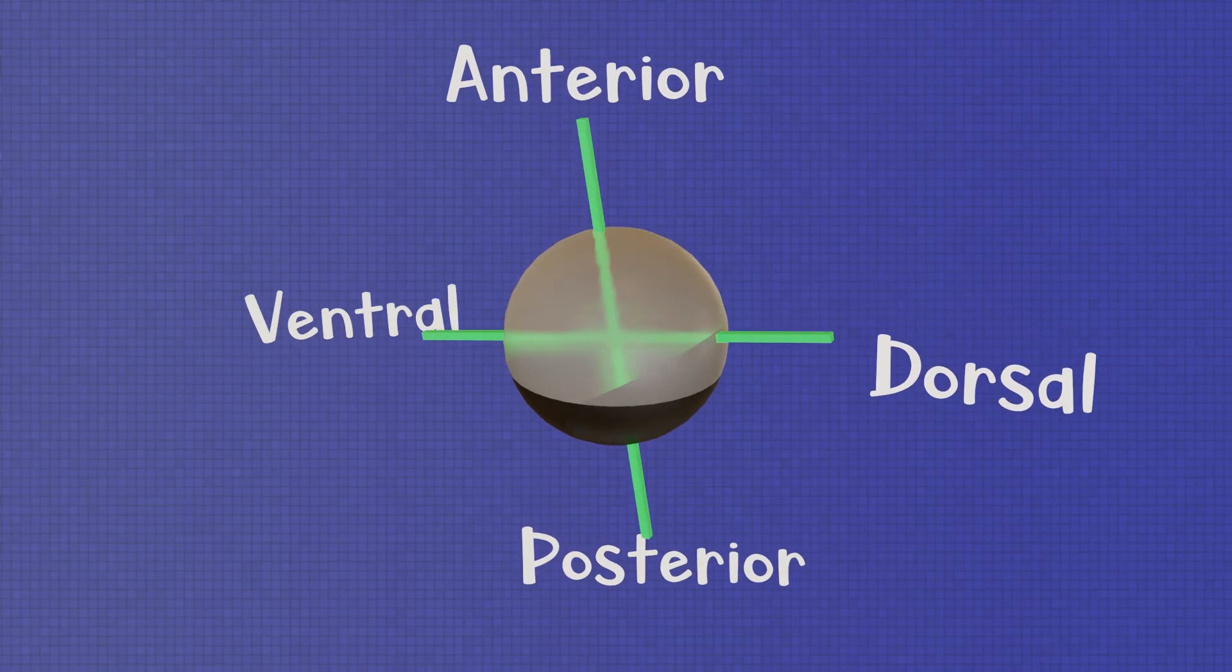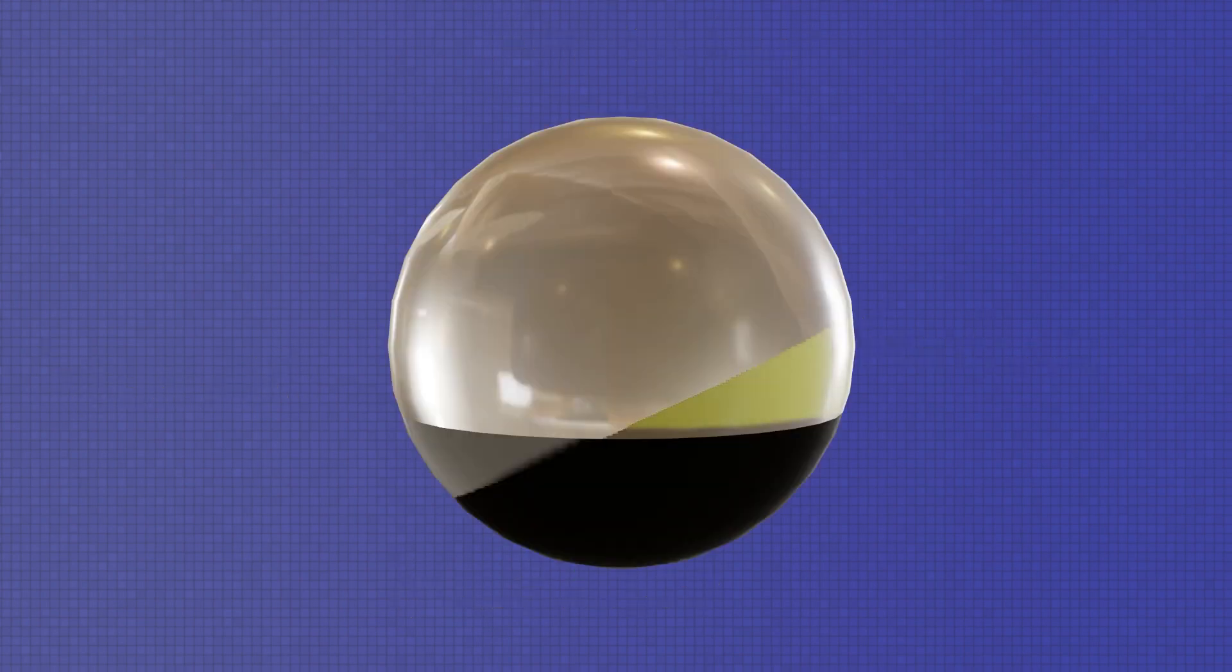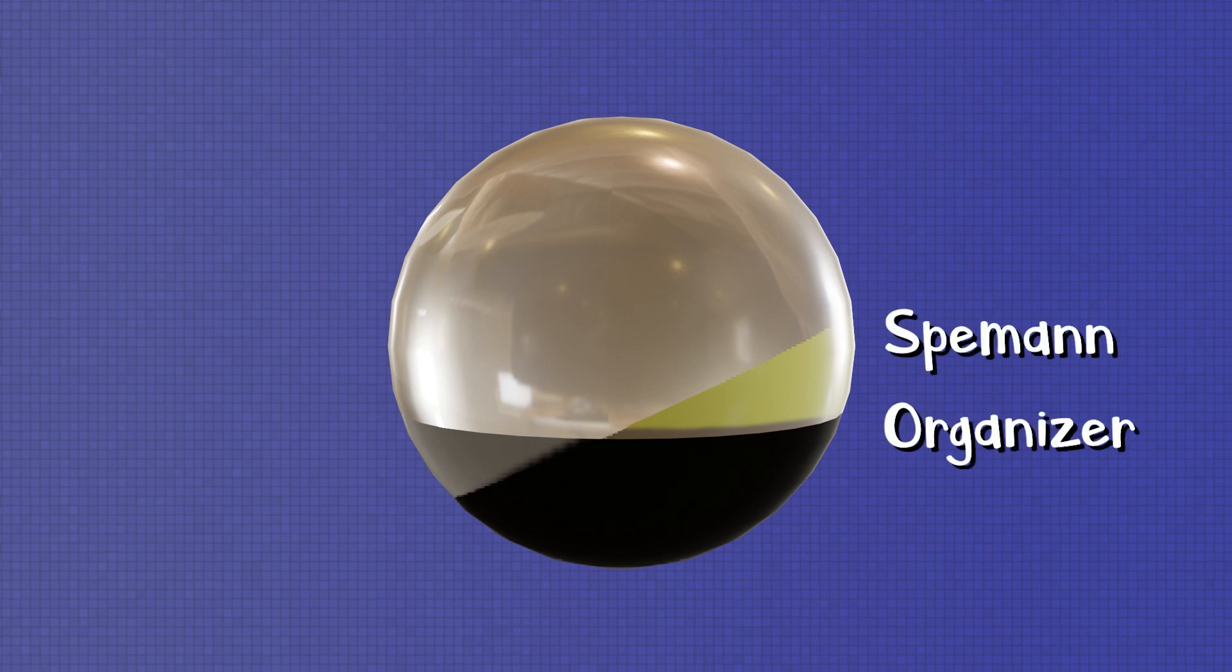So that solves one of our problems. We now have two distinct body axes, but what about the mesoderm? This Goldilocks region where beta-catenin is stable to create dorsal structures away from the vegetal pole is called the Spemann center, and it also plays an essential role in the formation of the mesoderm.